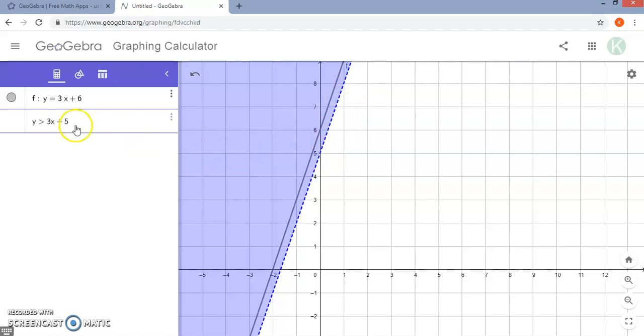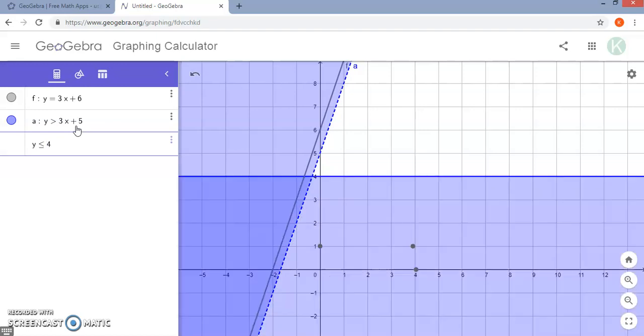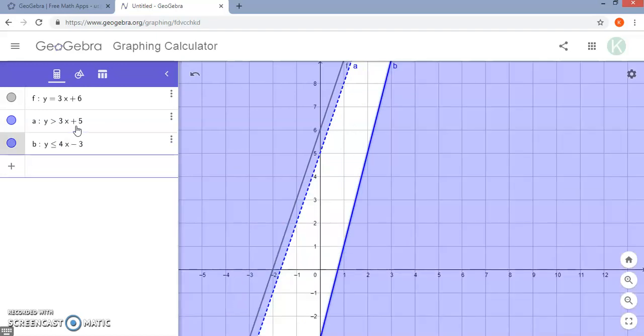You'll notice that it puts the appropriate dashed line beside it. If you need to include those points along the line, you can select your inequality symbol and then hit the equal sign, and it will turn it into a less than or equal to symbol or a greater than or equal to symbol as appropriate.